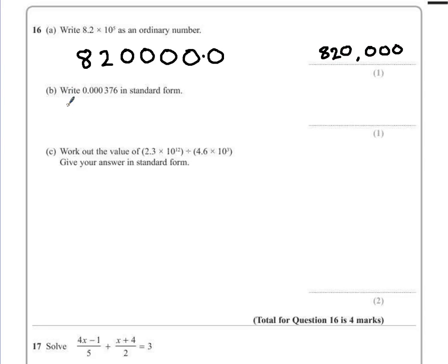Part B. Write 0.000376 in standard form. Standard form requires us to have a number between 1 and 10.